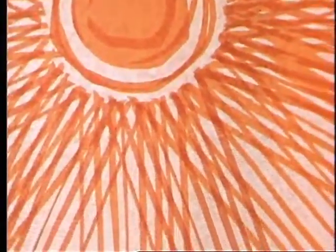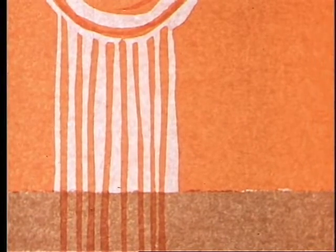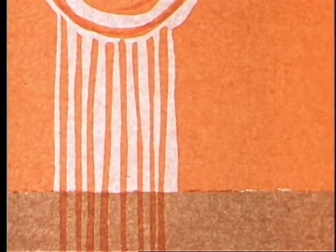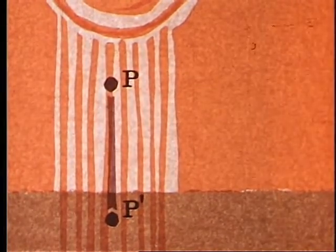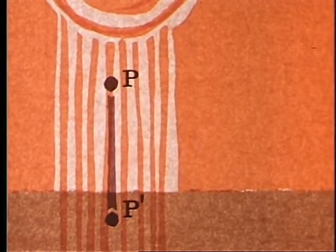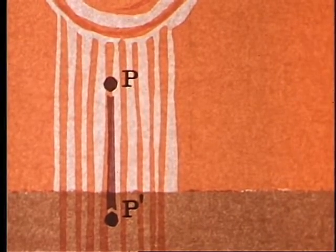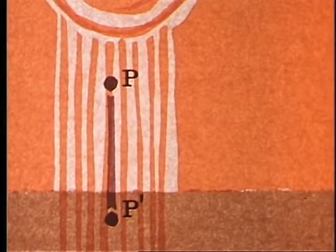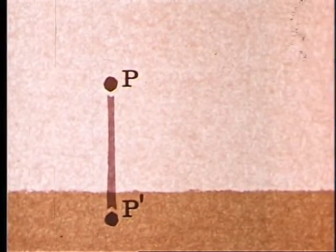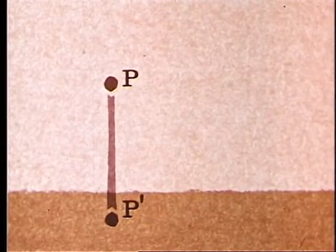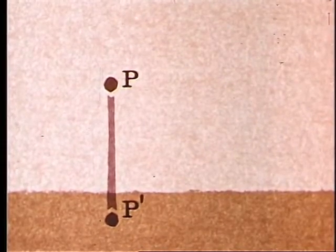We call this process of casting shadows when the sun is vertically overhead, orthogonal projection. The sun's rays are perpendicular to the ground, and if P is any small object in space and P' its shadow, the line joining the position of P to that of P' is perpendicular to the ground. Hence the term orthogonal, which means perpendicular. P' is said to be the orthogonal projection of P onto the ground, which we regard as a plane.